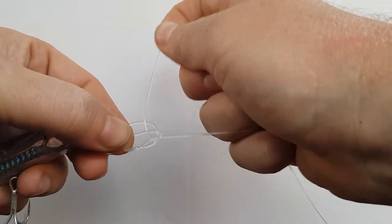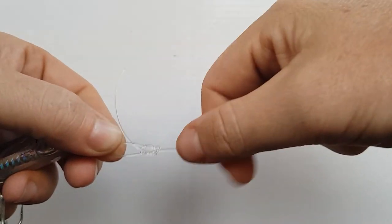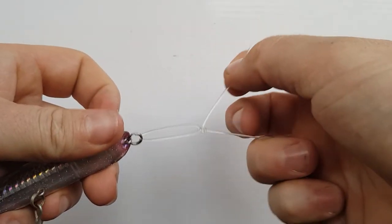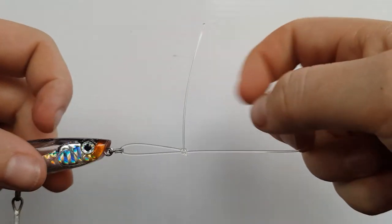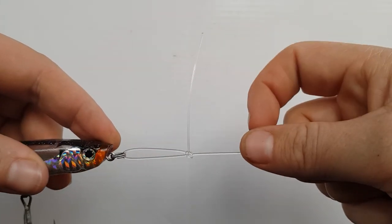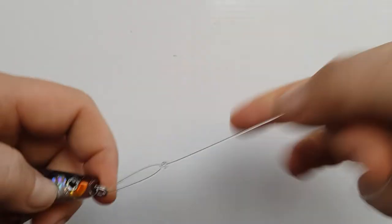Now pull that tag end tight, then pull the whole knot tight. You'll be left with the loop and the tag. The important part is that tag needs to be coming out at right angles, and that forms the loop.